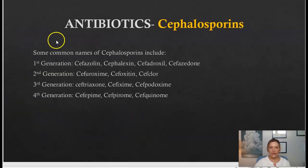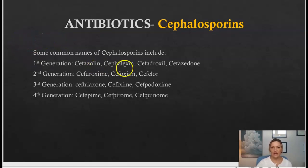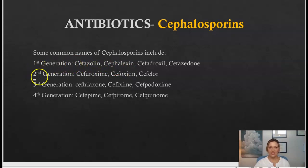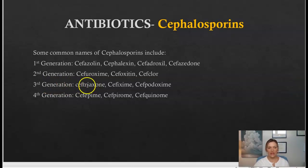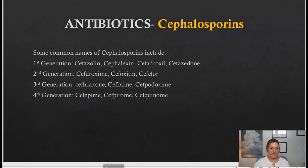Common cephalosporin names: first generation includes cefazolin and cephalexin, which are very commonly given. Second generation includes cefuroxime. Third generation, ceftriaxone is very commonly given. Fourth generation is cefepime. All of these are cephalosporins.